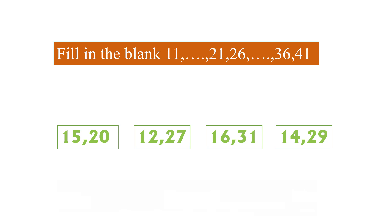Here we have to fill in the blanks: 11, blank, 21, 26, blank, 36, 41. The options are: 15 and 20, 12 and 27, 16 and 31, or 14 and 29. We find the difference between consecutive numbers — 26 and 21 differ by 5, and 41 and 36 also differ by 5, so this is skip counting by 5. Adding 5 to 11 gives 16, and adding 5 to 26 gives 31. The answer is 16 and 31.